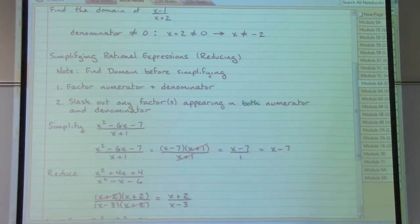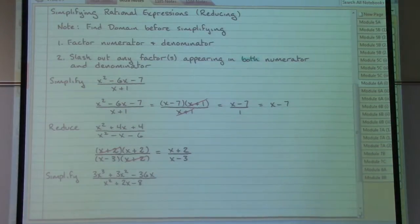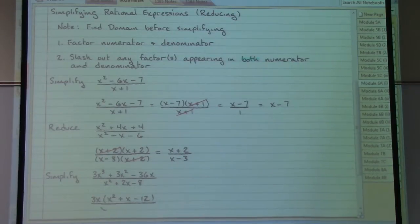And for a little bit of variety, one last example here of simplifying. Where we have things that are a little bit more involved, looking at our numerator, going through our factoring checklist, we have a common factor of 3x that we can factor out, meaning that we would have leftover x squared plus x minus 12. Down in the denominator, we do not see any greatest common factor to worry about, so we can just leave that alone for the moment.